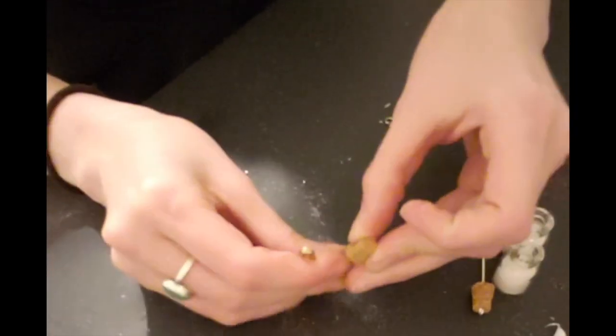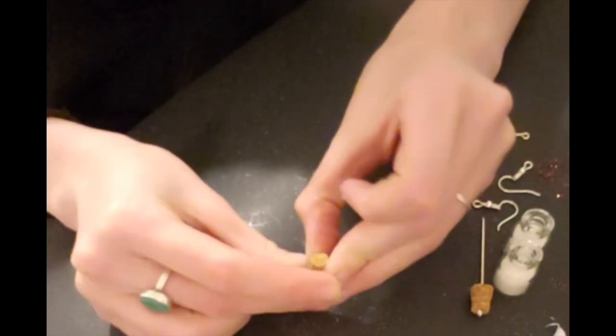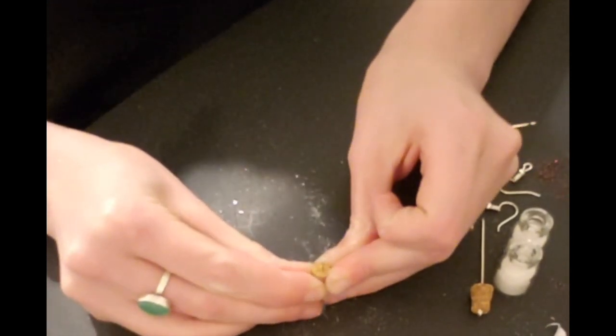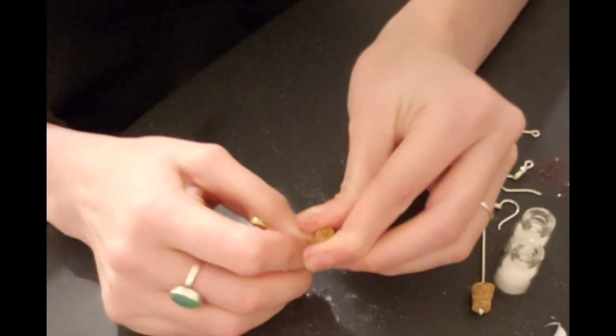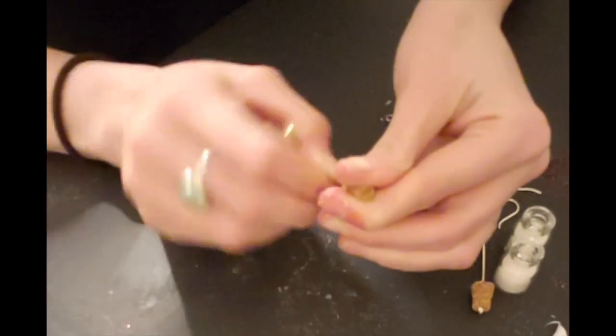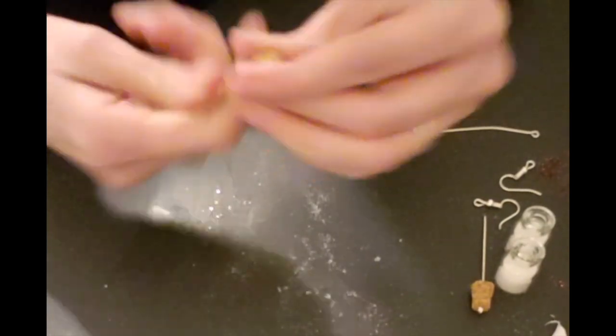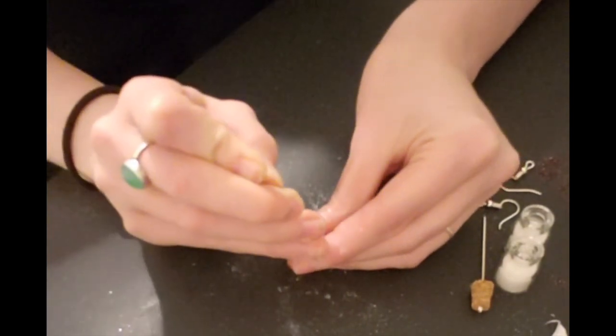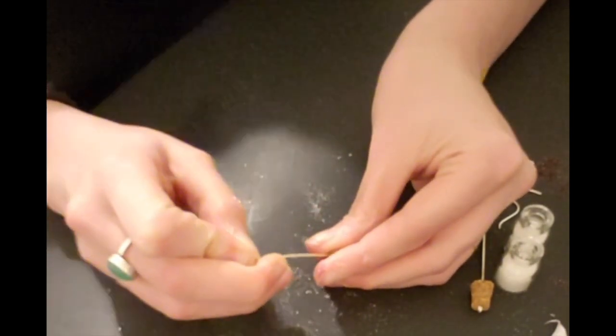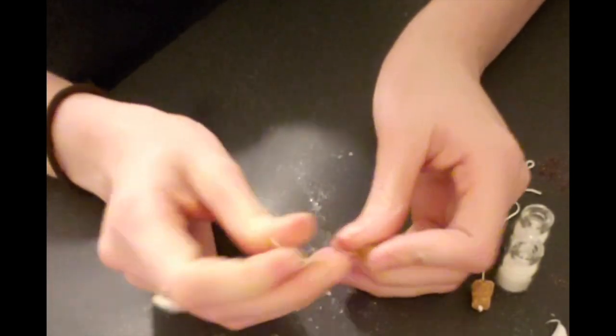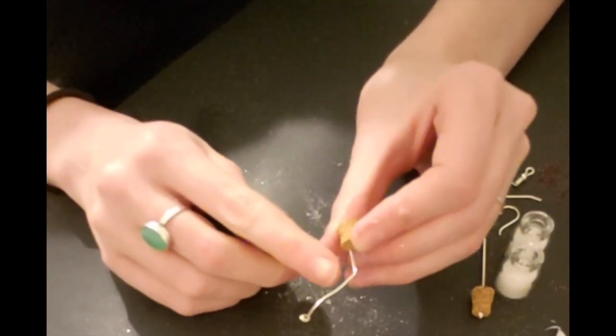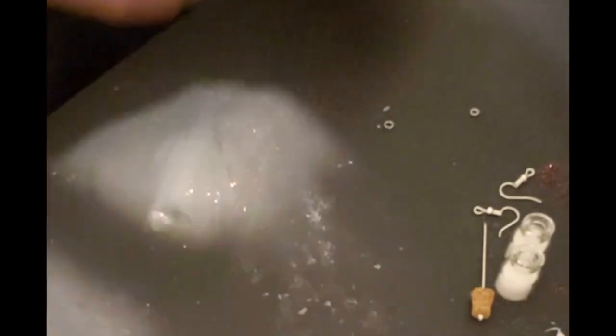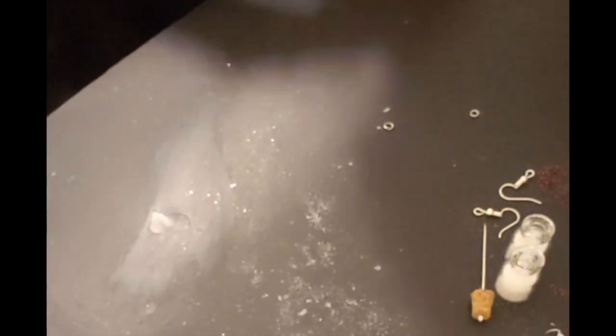And now I'm gonna do it again with the other one. Again, sorry about the glitter. It's messy, but it's fun. And then I'm gonna pull that out. Close it up so I don't hurt myself. And the reason you stab it through before so that way you don't have the wire bending like that when you're trying to put the earring post pin through.